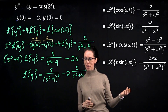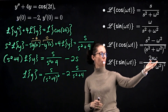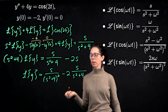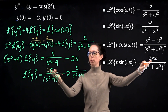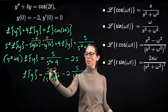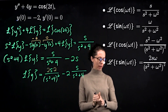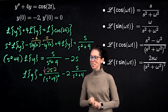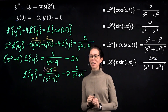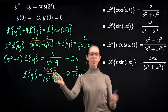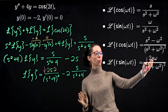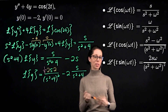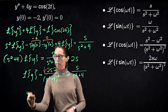For t times sine of 2t the numerator should be 2s omega, and here omega is 2, so we need 2 times s times 2. We currently have just s, so we rewrite s as one-fourth times 2s times 2 — bringing in a 4 in the numerator and a compensating one-fourth out front. Now 2s times 2 matches exactly 2s omega, so this is one-fourth times t times sine of 2t.